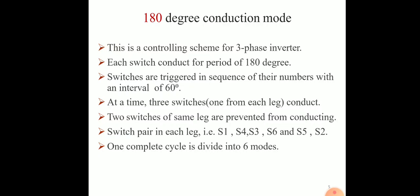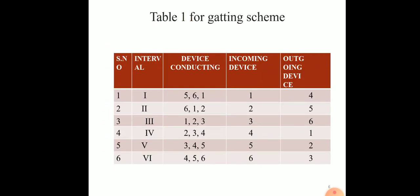One complete cycle is divided into 6 modes. Table 1 shows the gating scheme. Step 1: thyristors 5, 6, 1 conduct. Incoming device is 1 and outgoing device is 4. Step 2: from 60 to 120 degrees, devices conducting are 6, 1, 2. Incoming device is 2 and outgoing device is 5. Step 3: from 120 to 180 degrees, devices conducting are 1, 2, 3. Incoming device is 3 and outgoing device is 6.